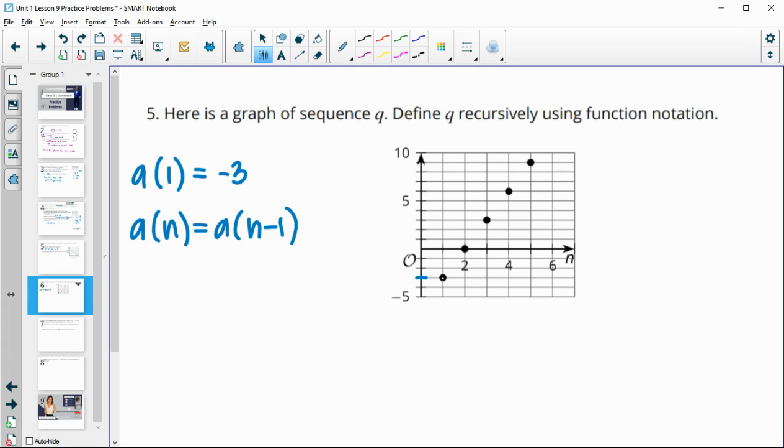So this one was at negative 3. This one's at 0. This one is at 3. This one is at 6. This one is at 9. So it's going up 3 each time. And then we'll say for n is greater than or equal to 2 since we defined the first term.